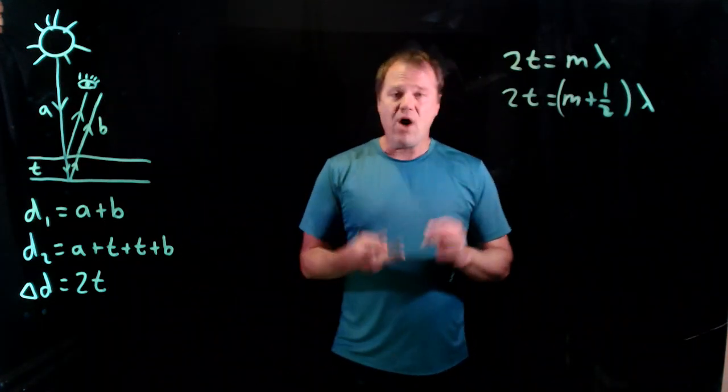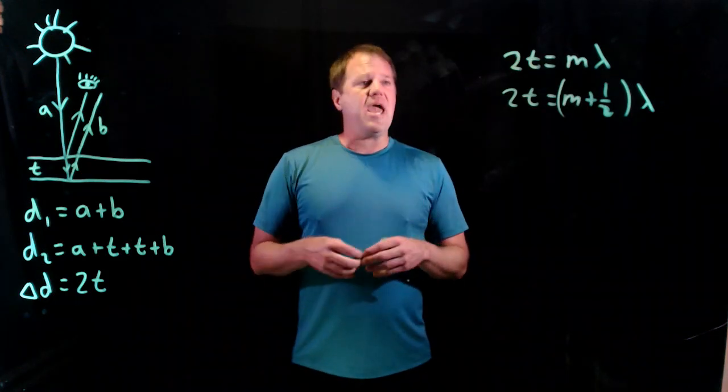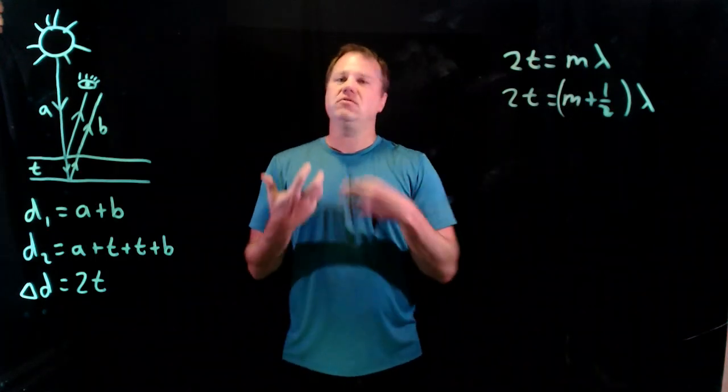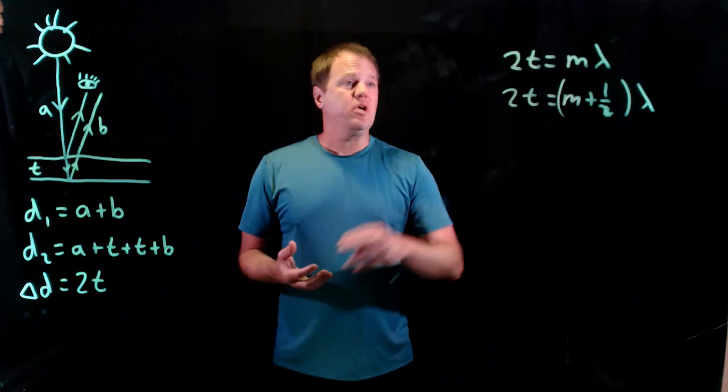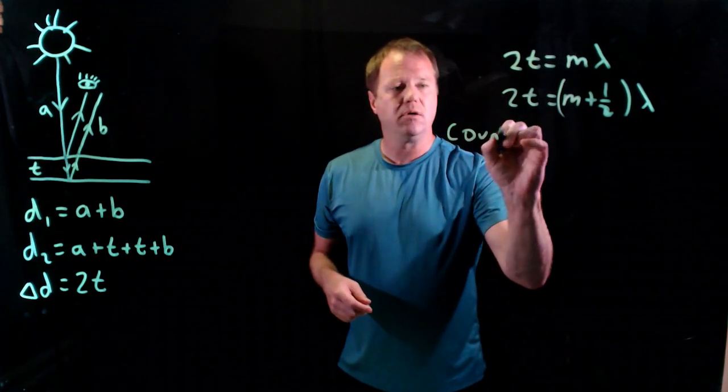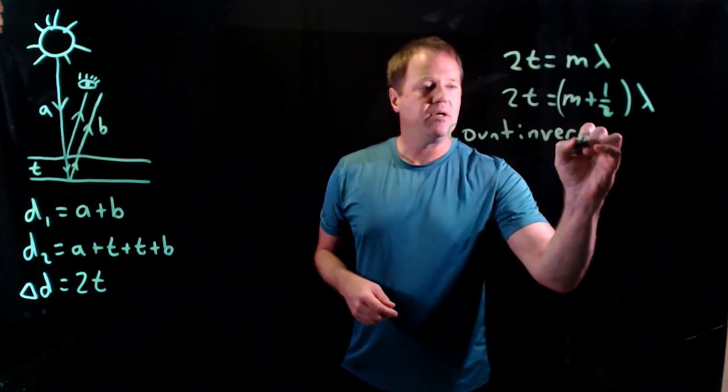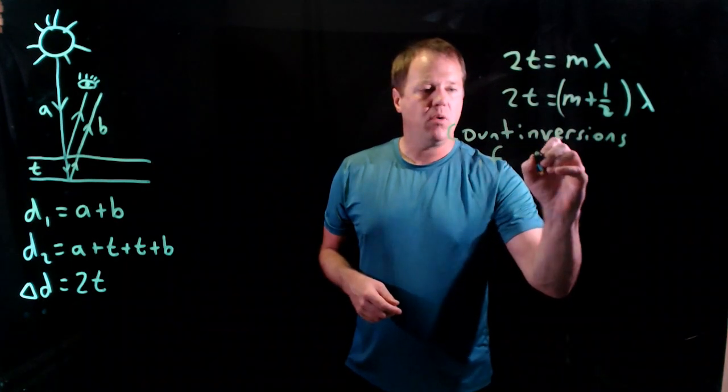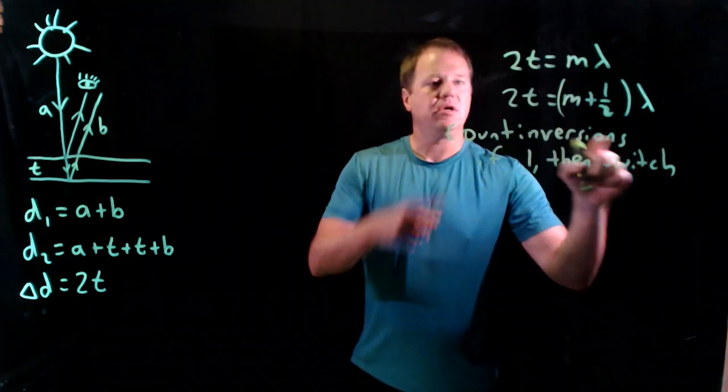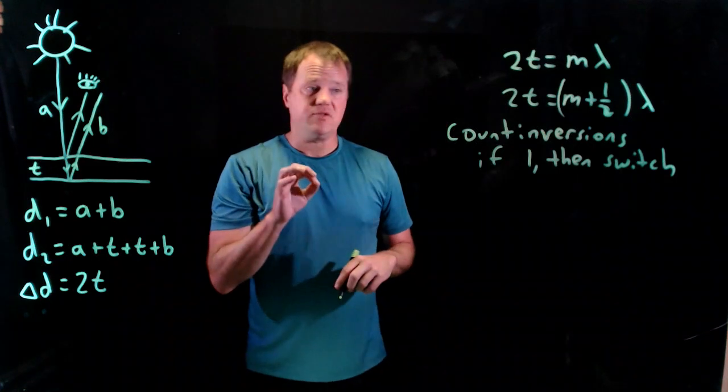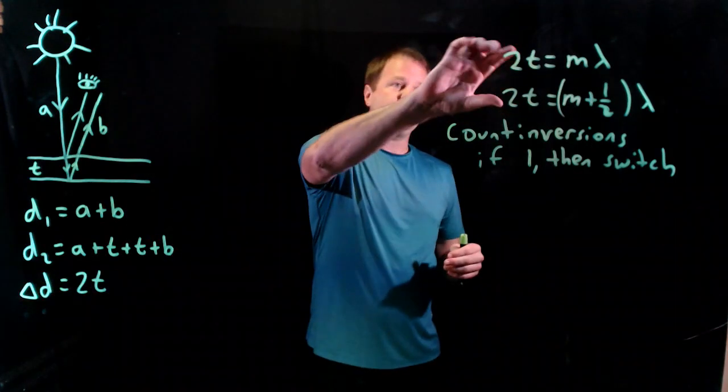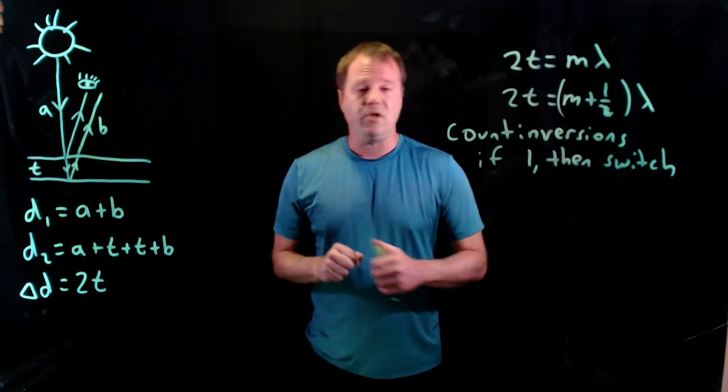So what you have to do is count the inversions. It's going to be zero, one, or two. And if it's zero or two, then your physical intuition of this is constructive and this is destructive would be correct. However, if there's only one inversion, then these get switched. If one, then switch the formulas. You'd use this one for constructive and this one for destructive. So be careful. Don't skip that step. So path difference of twice the thickness, count the inversions, and then switch these formulas around if needed.